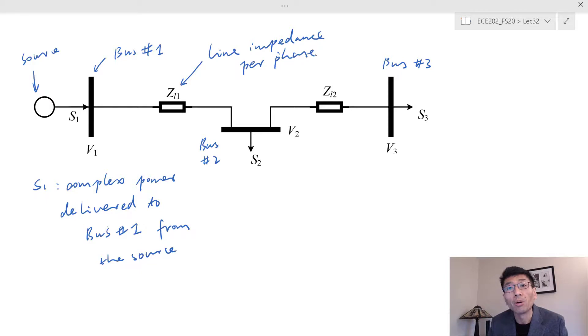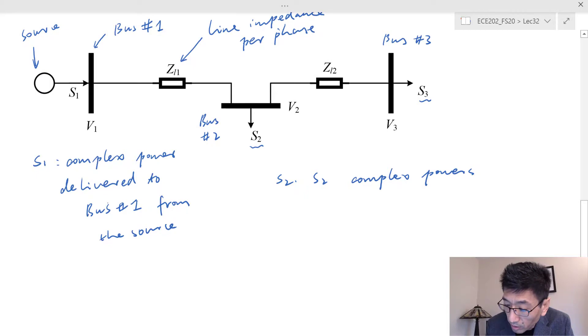S2 and S3 are the complex power drawn from these buses, or complex powers delivered to the loads.